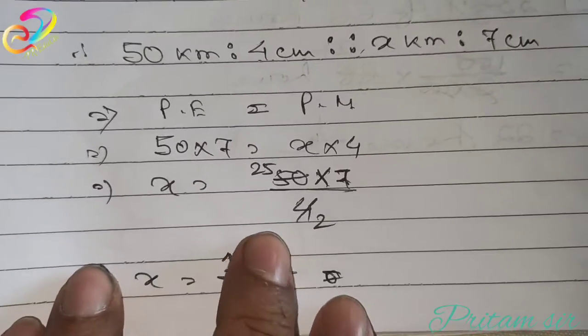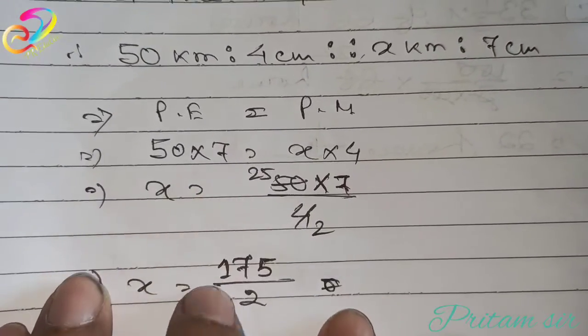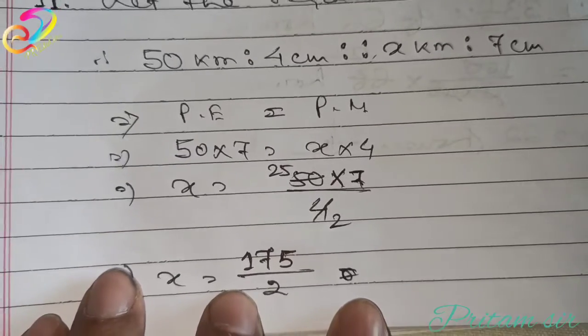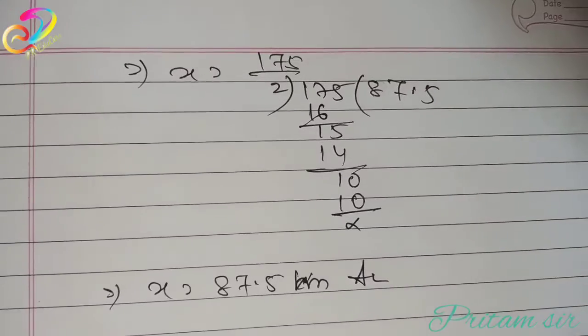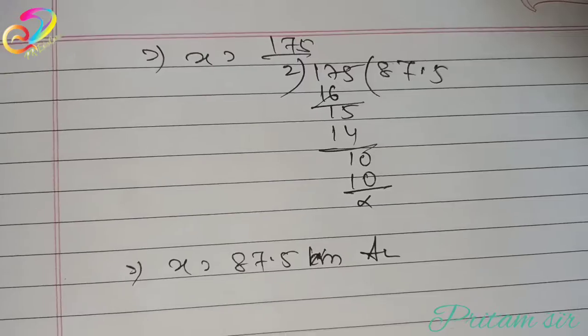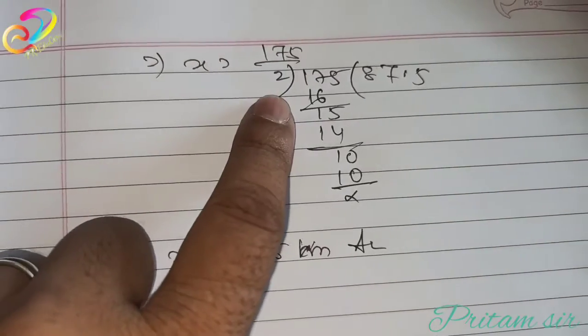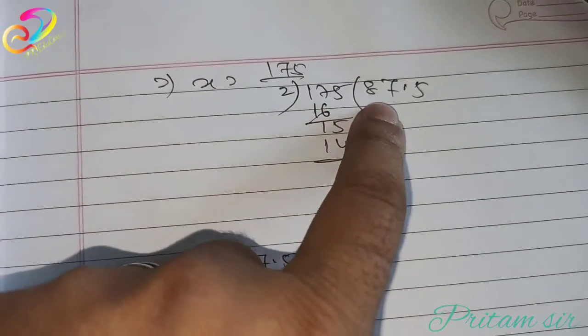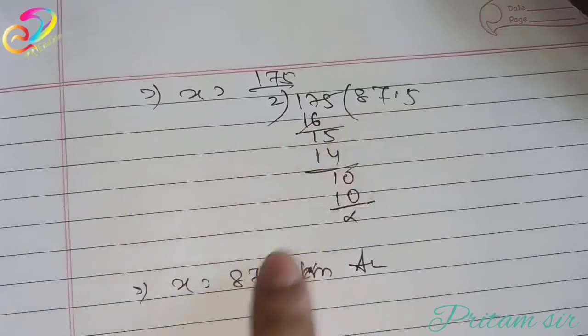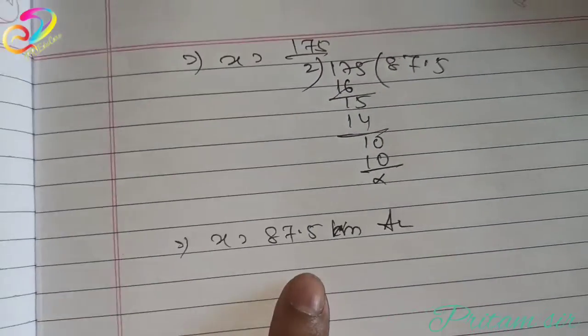So, 50 into 7 by 4. Ultimately, 175 by 2. On continuing the solution, x equal to 175 by 2. So, on dividing, we get 87.5. So x equal to 87.5 kilometer.